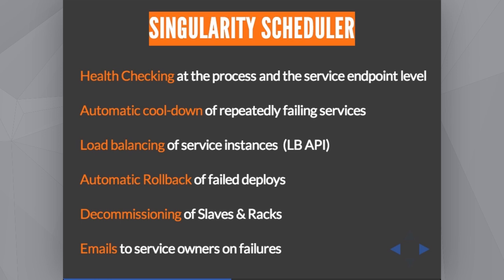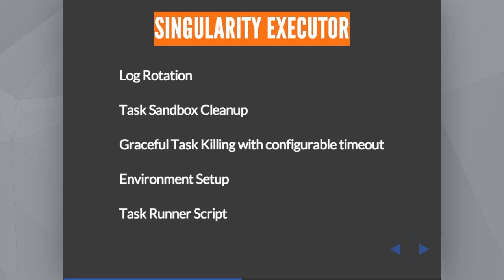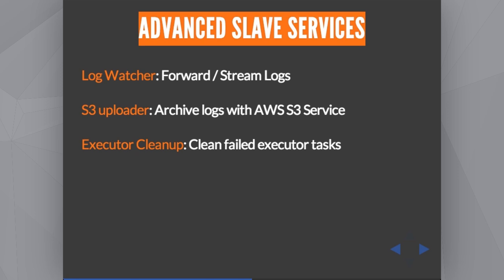Another cool feature is that you can decommission a whole slave and move all its tasks to another slave, and even for racks — logical racks like our availability zones — you can move an entire availability zone's tasks to another availability zone. We also send emails to the owners of a task every time something fails. The executor does log rotation, cleans up all task data after it finishes so you don't end up with a full disk, and handles other operations to set up complex environments. You can send your log files to Fluentd, to Logstash, and then to Elasticsearch for instant searching. We also have automatic uploading to S3 for all rotated log files, and we clean up any mess left behind when executors die.